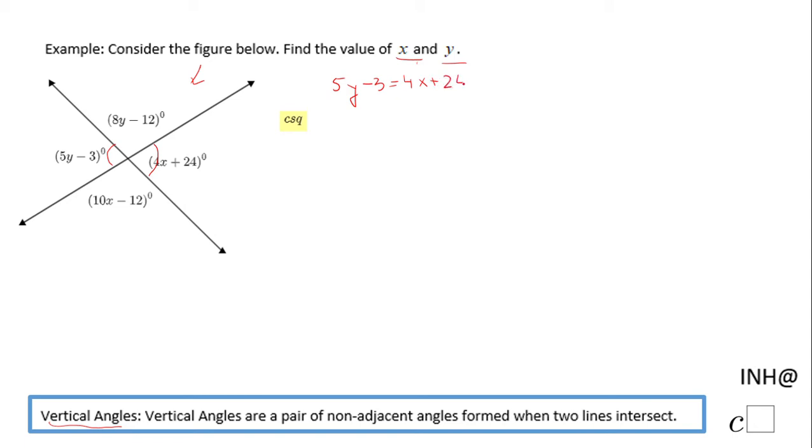If they are congruent, the measure is the same. The measure of this angle is 5y minus 3 and 4x plus 24. Similarly, we can do the same thing for these two angles, which are also vertical angles. They are congruent: 8y minus 12 equals 10x minus 12.